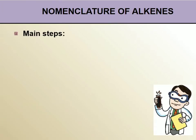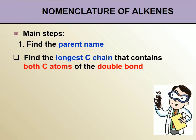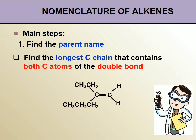To give the IUPAC nomenclature for alkene, the first step will be to find the parent name. We will choose the longest carbon chain that contains both carbon atoms of the double bond. For example, if you look at the compound, the longest carbon chain is 5 carbons with a double bond — 1, 2, 3, 4, 5. So our parent name will be pentene.